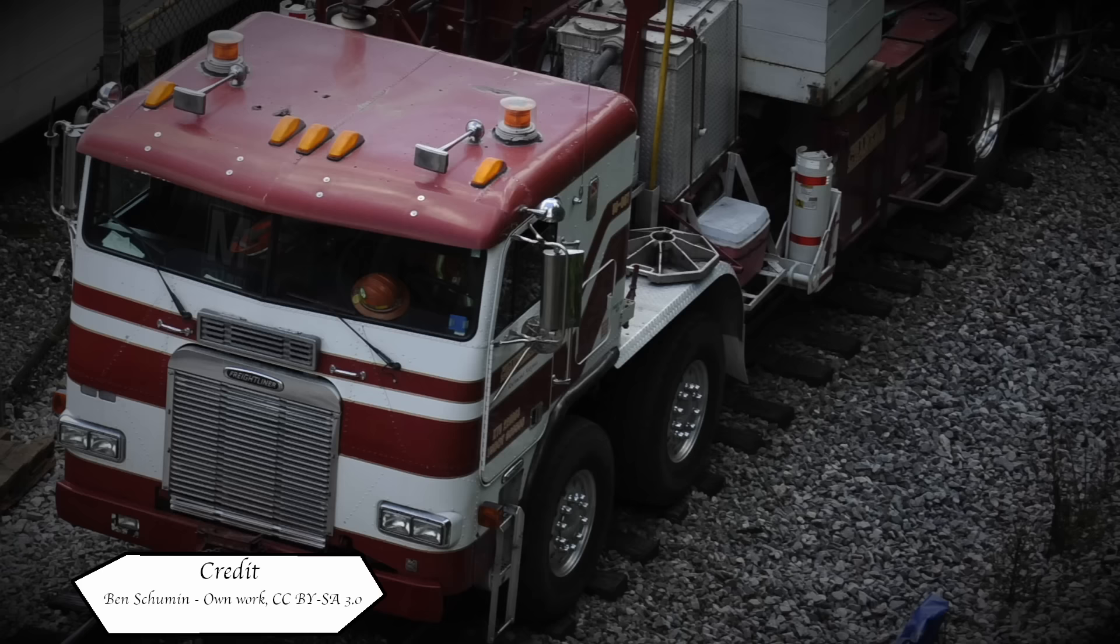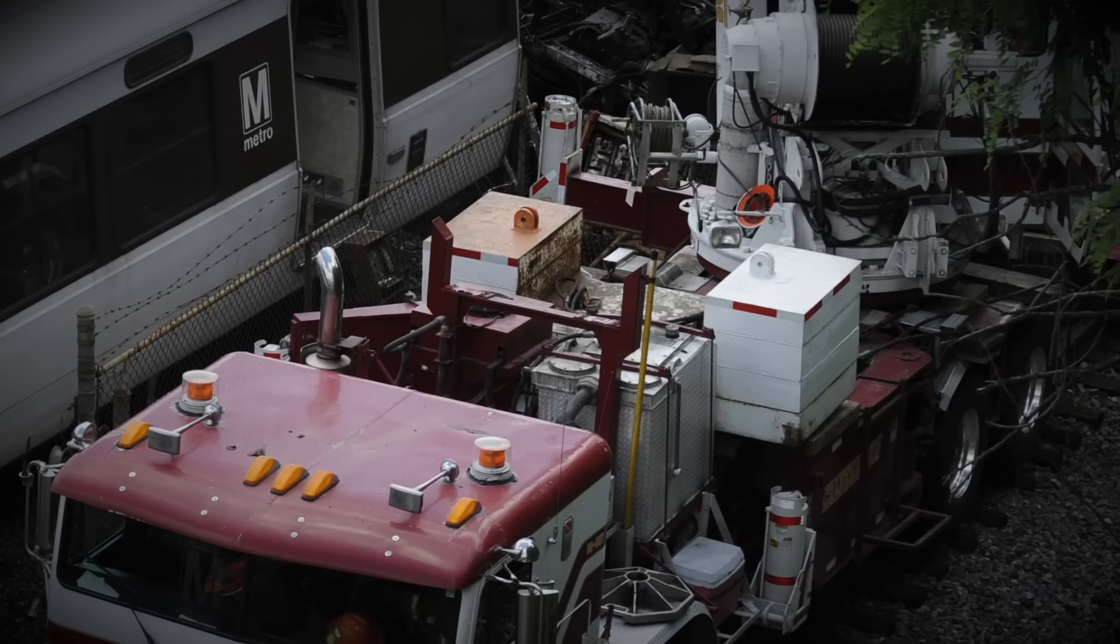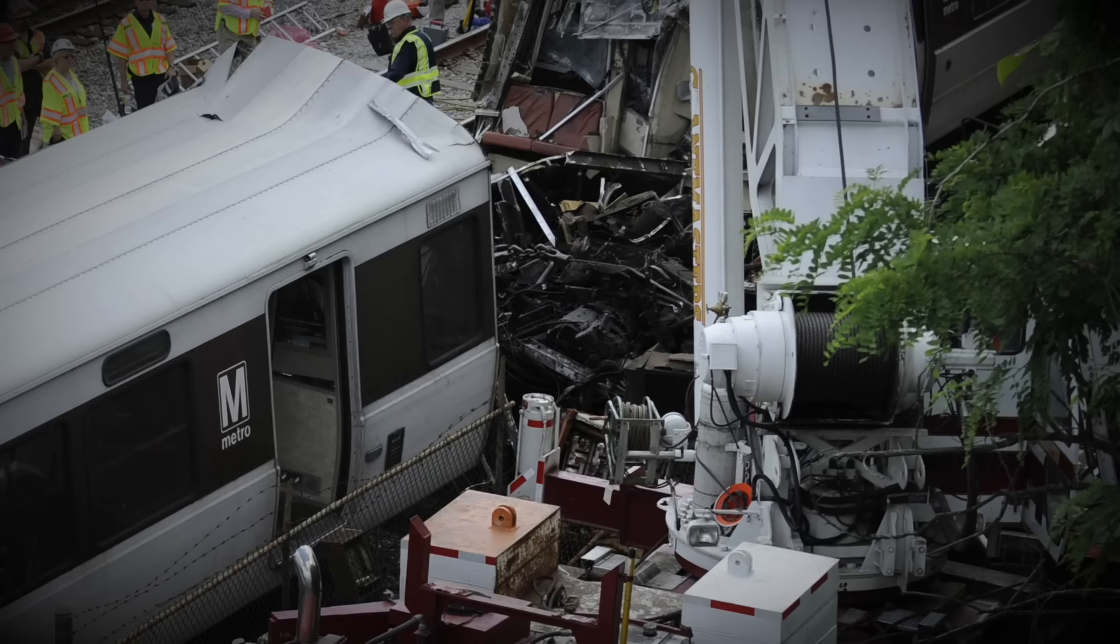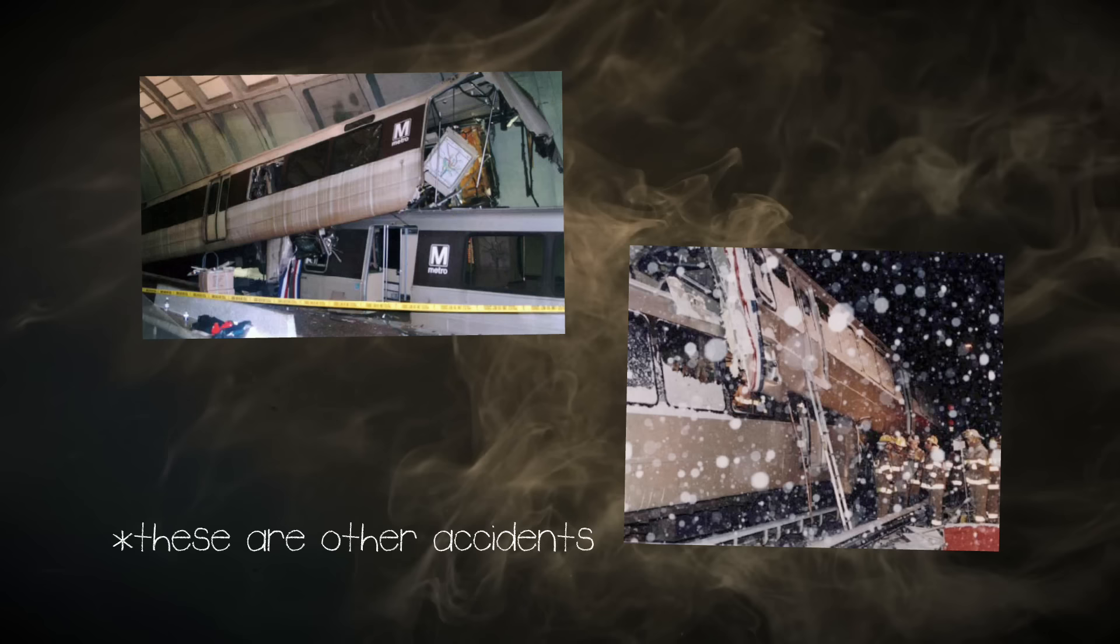In the immediate aftermath, the crash site was photographed and inspected by the FBI and Washington Metro's engineering team. This allowed the NTSB to investigate whilst cleanup work was conducted. The NTSB would need to find out how an automatic train could rear-end another. This would lead investigators to look into the system's past, as a tragically similar near-miss incident had happened just a few years before.